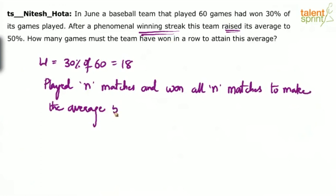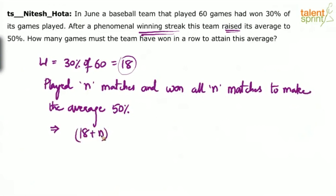That means they have won 50% of their matches. Which implies: they had already won 18 matches, and now they have played N and won all N matches. So we can say number of matches won — 18 plus N — should be equal to 50% of all the matches that they have played. How many matches have they played? They have played 60 earlier and now N more, so 60 plus N.